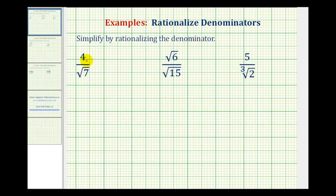For four divided by square root seven, if we want to eliminate the square root of seven from the denominator, we would need two factors of seven underneath the square root rather than just one. So the idea is we multiply both the numerator and the denominator by square root seven. This is the same as multiplying by one.